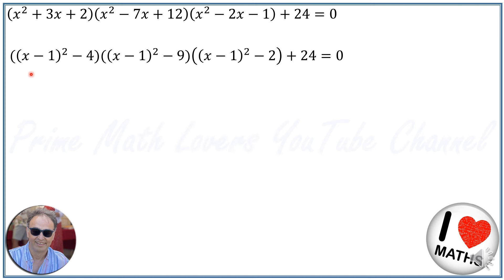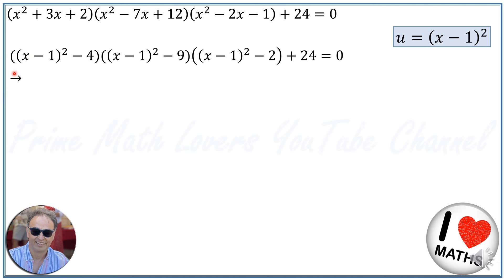To solve this we use a change of variable. We create a new variable u, setting u = (x-1)². Writing the equation in terms of u gives us: (u-4)(u-9)(u-2) + 24 = 0. Our sixth degree equation is now a cubic equation.